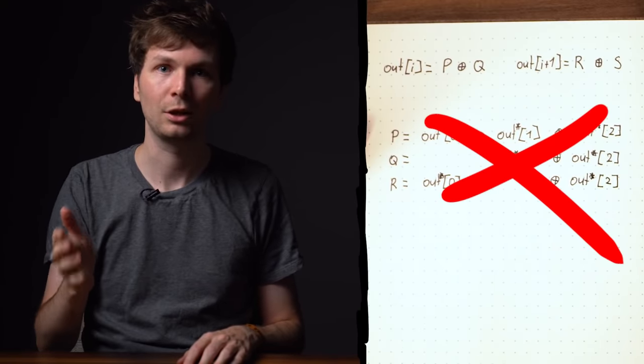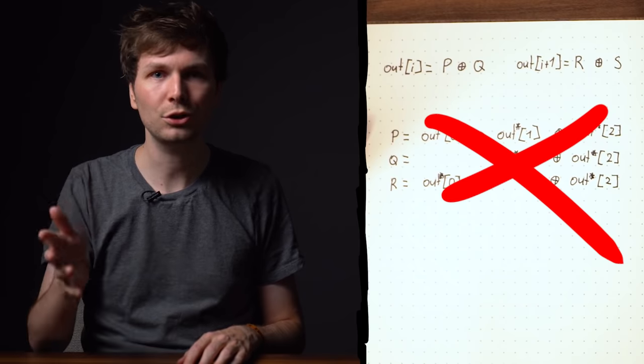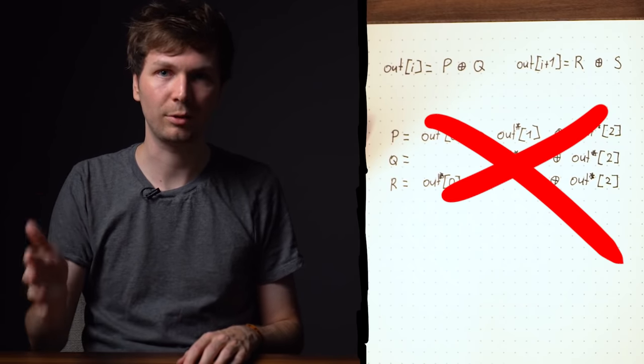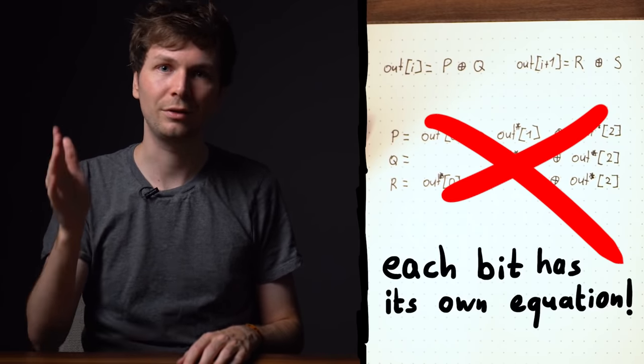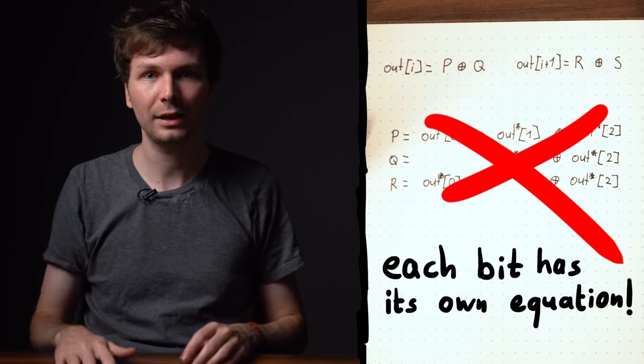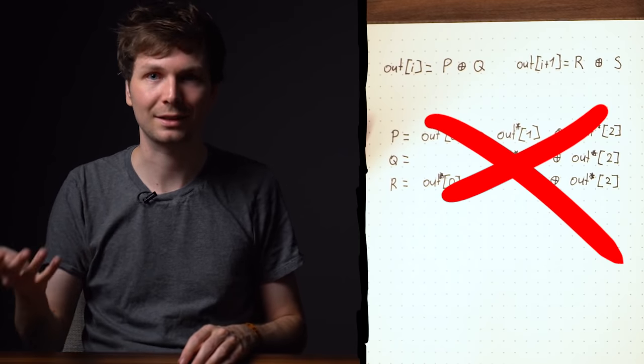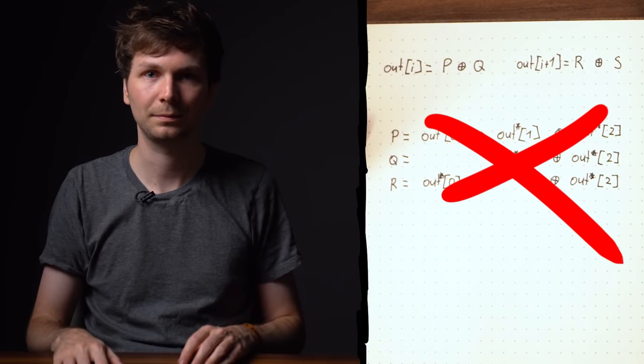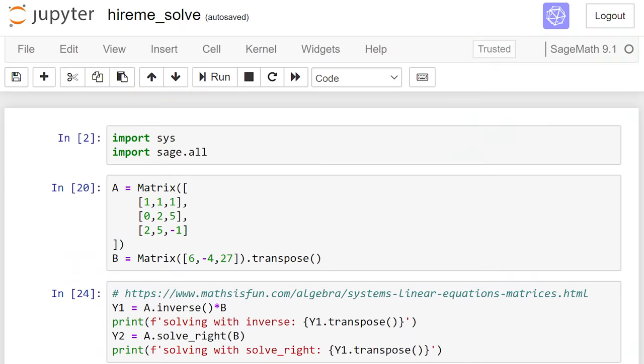Which means it's not a system of 3 linear equations, one for each byte. It's a system of 24 linear equations, defined for each individual bit. Or in reality with our 32 bytes, we have a system with 256 single bit equations. And here is my super ugly code for this.